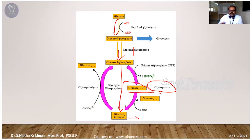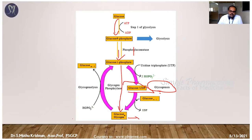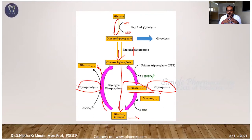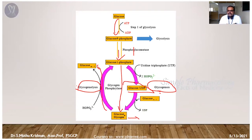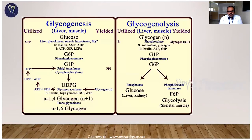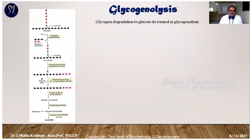This cycle forms a reservoir. When the body needs glucose, the stored glycogen breaks down into glucose molecules — that process is glycogenolysis. Both glycogenesis and glycogenolysis are closely related, reversible pathways.